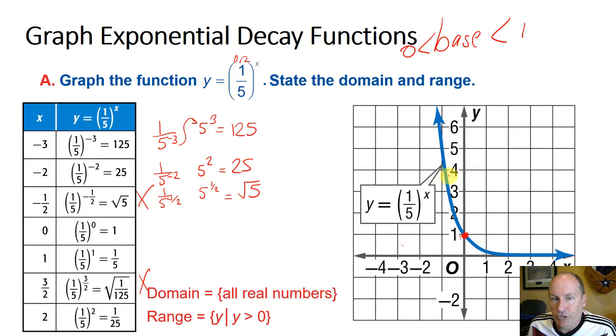That's what that parent function of y equals 1 fifth to the x looks like. You can see that instead of increasing, like an exponential growth function, it's decreasing. In fact, a related function to this would be 5 to the x. 5 to the x would look somewhat like my red diagram here. You can see the relationship. 5 to the x constantly increasing by a factor of 5. 1 fifth to the x is constantly decreasing by a factor of 5, because instead of multiplying by 5, we're multiplying by 1 over 5.